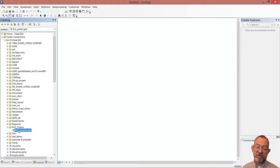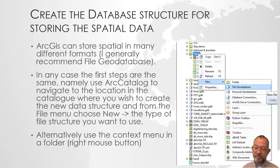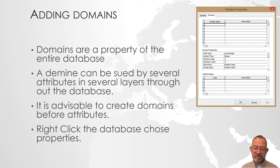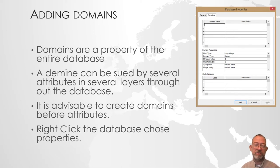The next step is to create domains. Domains are subsets of data types. The reason we create them first is that the same domain can be used in many different feature classes and attributes. A domain is not something associated with an individual attribute — it is shared by all attributes in the database. Therefore, domains are typically created first so that when you create your attributes you can assign them to a domain.